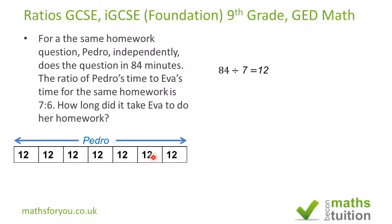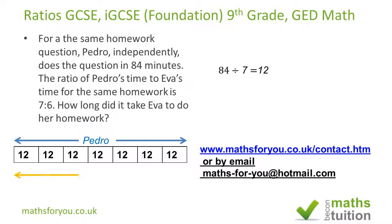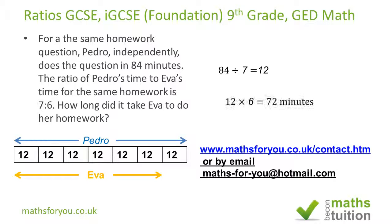Each part is 12 minutes. For Eva's time, because the ratio is seven to six, instead of doing it in seven divisions, Eva has to do it in six divisions. So we multiply 12 by 6, which gives 72 minutes. Eva did her homework in 72 minutes.